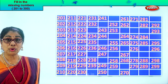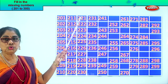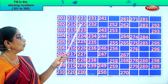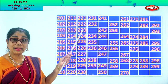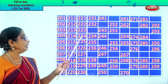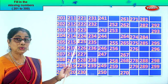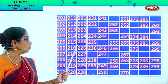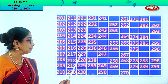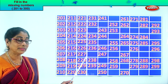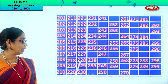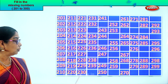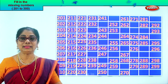Let's read them all: two hundred and twenty-one, two hundred and twenty-two, two hundred and twenty-three, two hundred and twenty-four, two hundred and twenty-five, two hundred and twenty-six, two hundred and twenty-seven, two hundred and twenty-eight, two hundred and twenty-nine, two hundred and thirty.